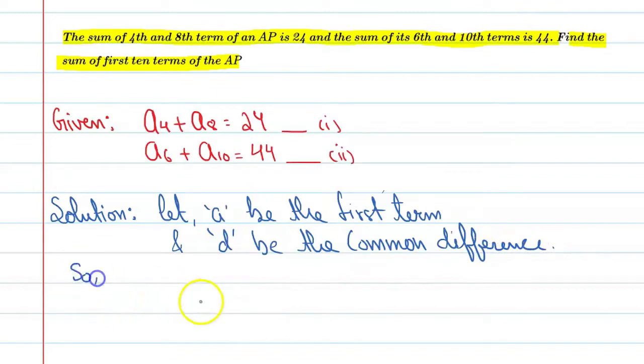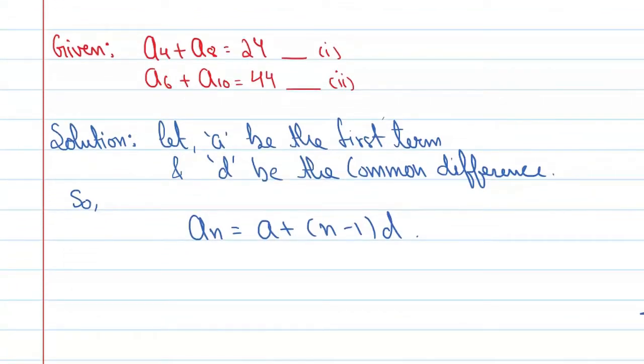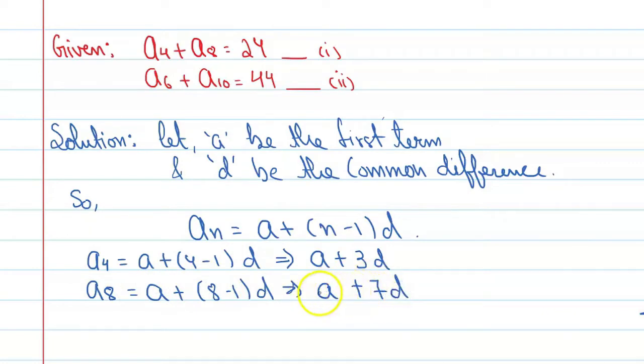So, we know that Nth term is equal to A plus (N minus 1) into d. Therefore, the value of A4 is equal to A plus 4 minus 1 into d. So, you can say A plus 3d. Similarly, A8 is equal to A plus 8 minus 1 into d. You can say A plus 7d.